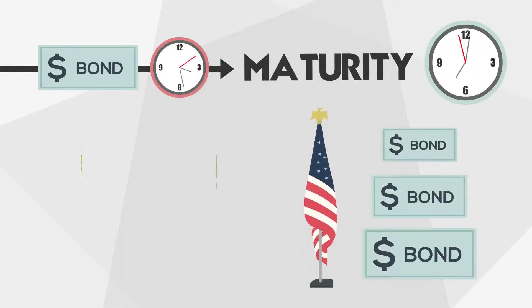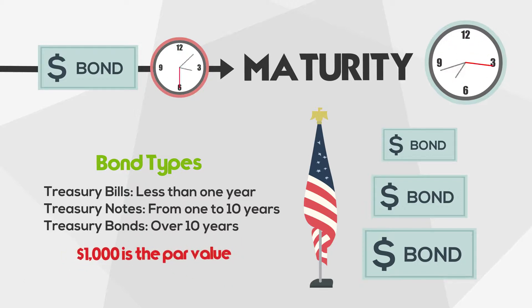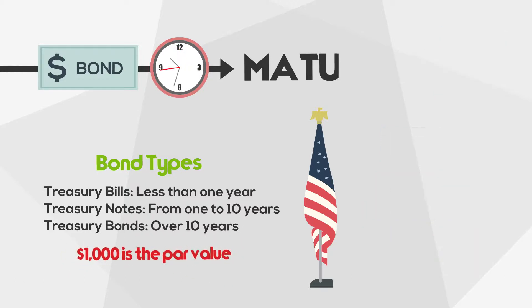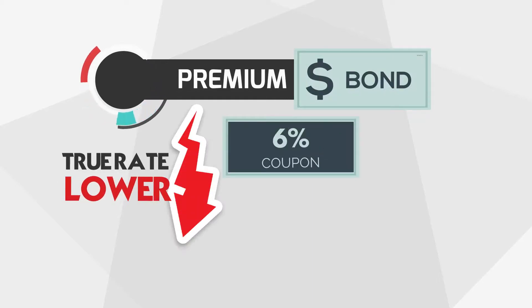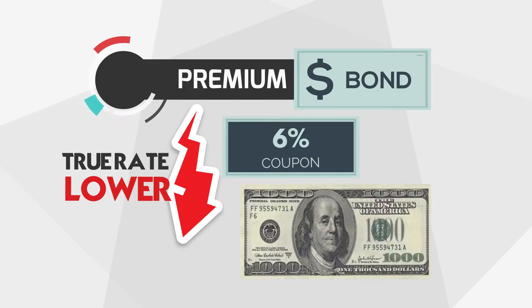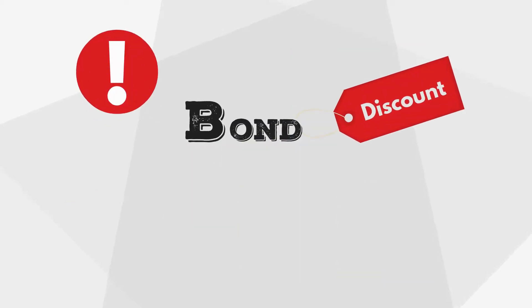Each bond also states the time to maturity. For U.S. government bonds, they vary by their maturities. When a bond matures, the par value is repaid. If you buy a bond at a premium with a stated 6% coupon, your true rate is lower because you'll receive $1,000 when it matures even though you paid a premium. The opposite occurs with the discount bond.